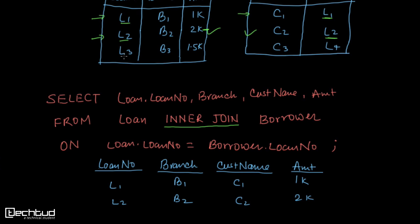We have L3, but we don't have any entry for L3 in the borrower table. So after performing inner join, this row will be discarded. It will not be included in the output.